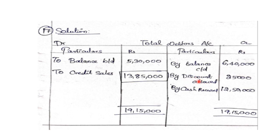On the credit side: discount allowed 25,000 — this is because when we sell a product, we give a discount to the customer. Cash received from debtors is 12,50,000. So the credit side totals: 6,40,000 plus 25,000 plus 12,50,000 equals 19,15,000. Therefore credit sales = 19,15,000 minus 5,30,000 = 13,85,000.